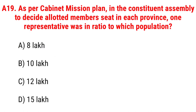Next question: as per the Cabinet Mission Plan, in the Constituent Assembly to decide the allotted member seats in each province, one representative was in ratio to which population? Option A, 8 lakh; B, 10 lakh; C, 12 lakh; D, 15 lakh. The right answer is Option B, 10 lakh.